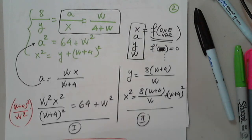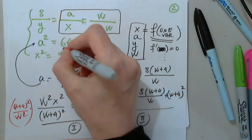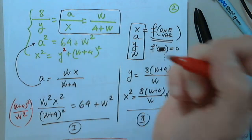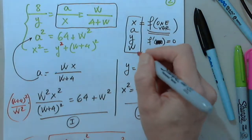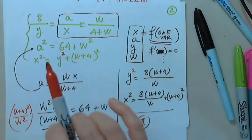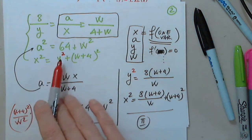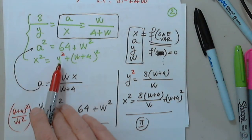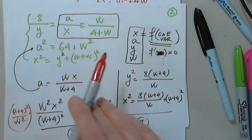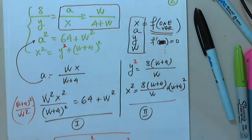The professor reviews the equations and notes that X squared equals Y squared plus (4 plus W) squared — confirming the setup. There may have been an error swallowing a factor of 2 somewhere, and the professor continues checking.